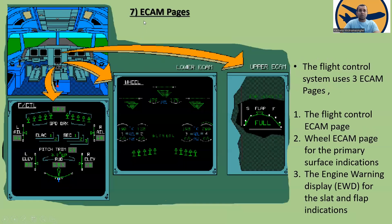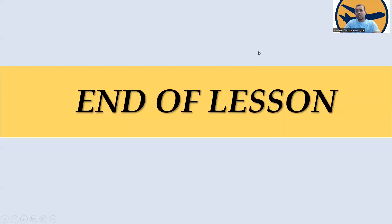The flight control system uses three ECAM pages: the flight control ECAM page, the wheel ECAM page for primary surface indications, and the engine warning display (WD) for slat and flap indication. You can see slat and flap indications on the upper ECAM, and on the lower ECAM wheel page you can see flight controls, speed brakes, rudder trim, elevator positions, and aileron positions left and right.